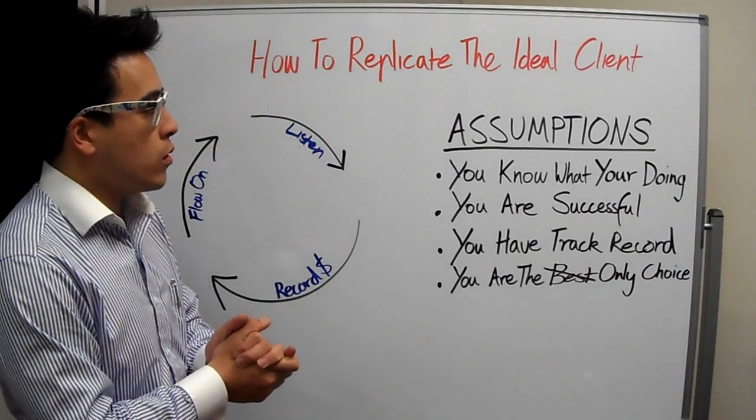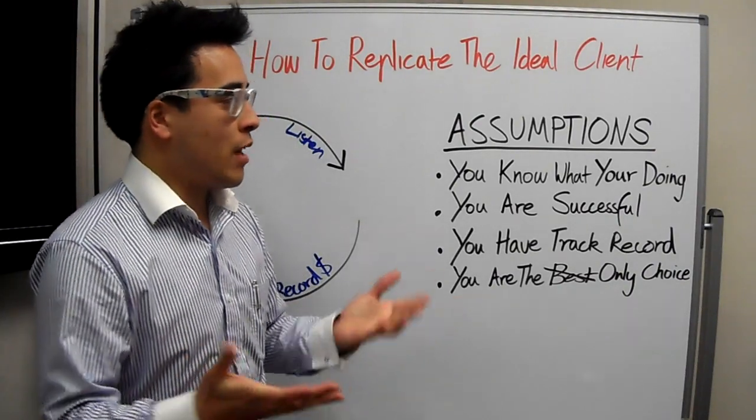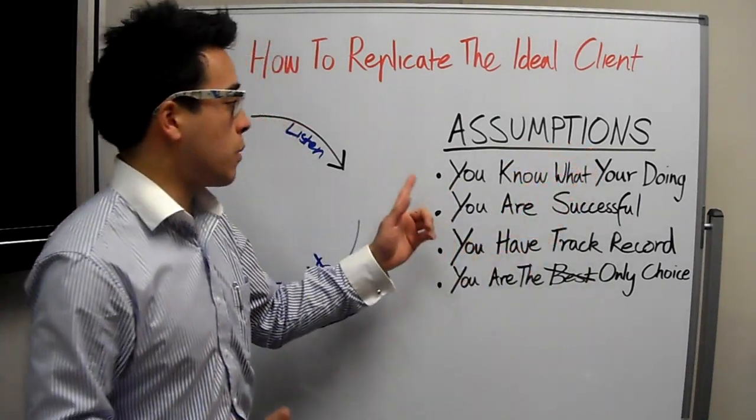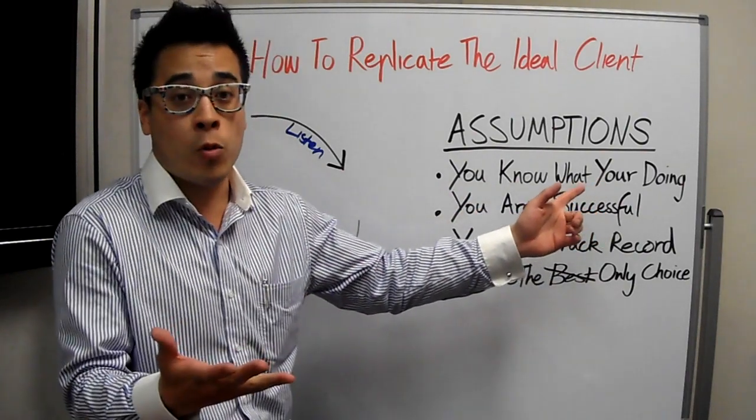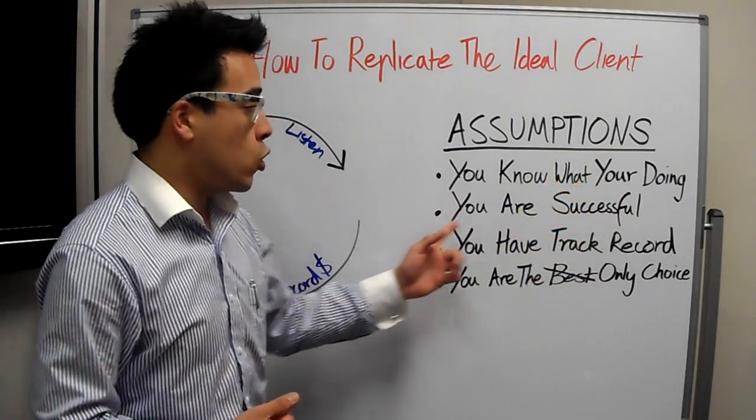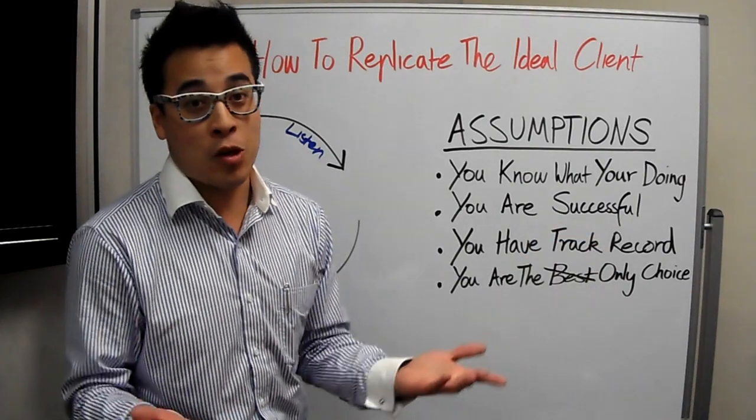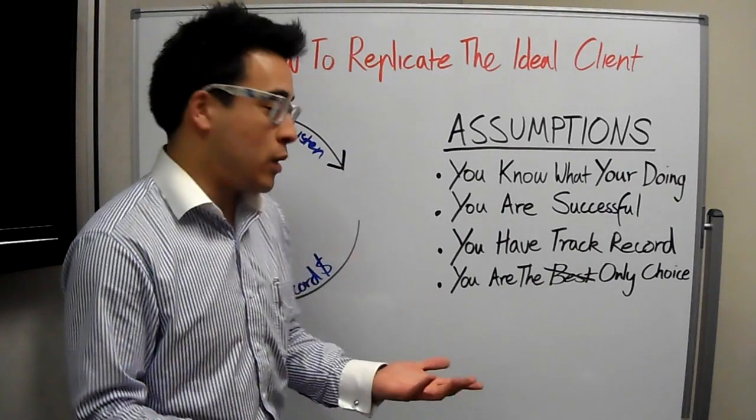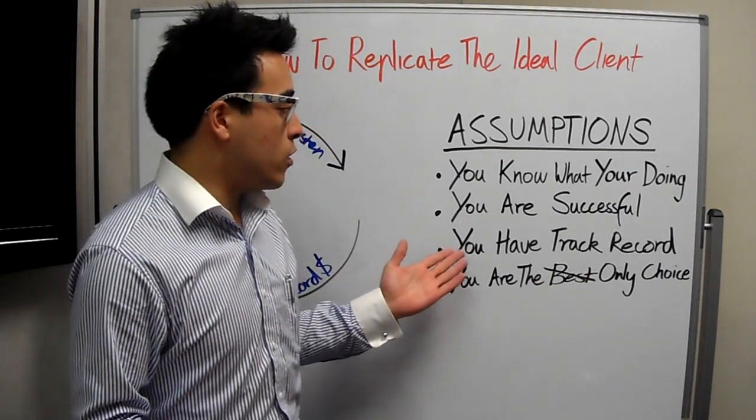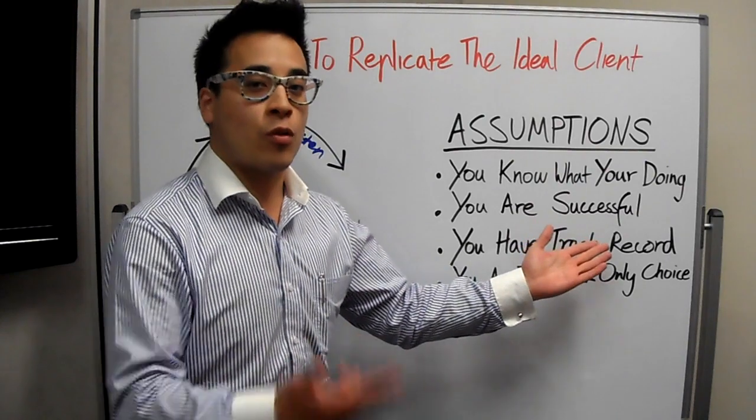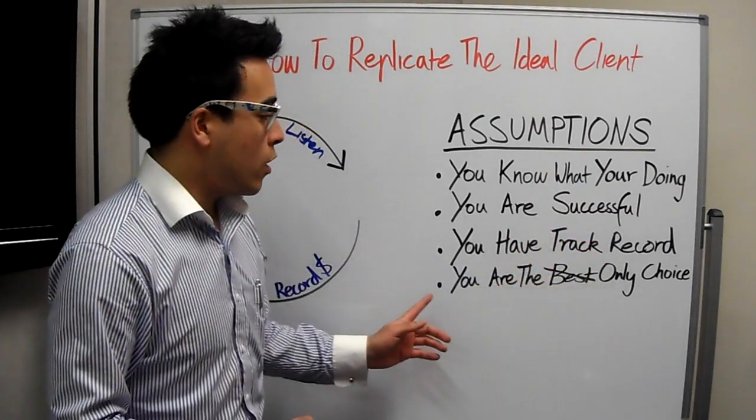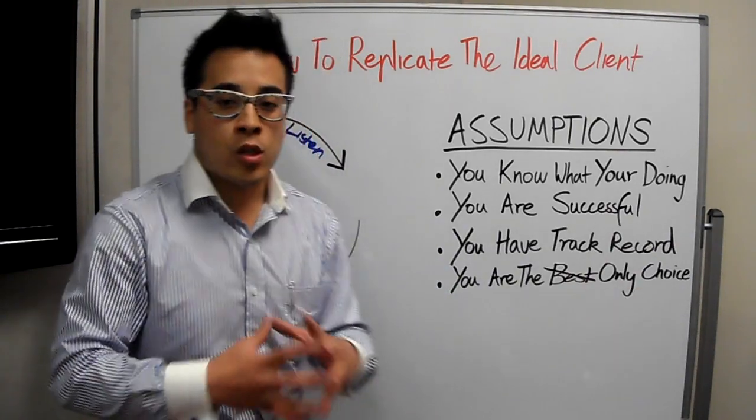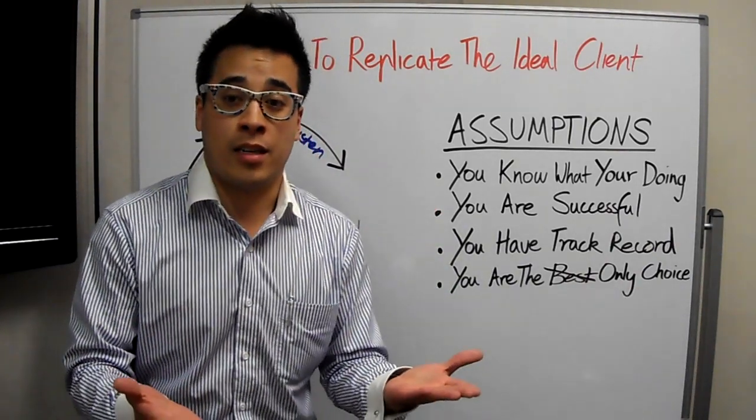Now, because you have their mind share, they make the assumption. Your prospective vendor makes the assumption that you know what you are doing, because you're everywhere. You must know what you're doing. You are successful. You're everywhere, you must be successful. You have track record. Once again, you're everywhere, you must be good. You're not everywhere by not doing the right thing. They must be good if they're everywhere. You are the only choice. And so it's about being everywhere. Their perception becomes their reality.